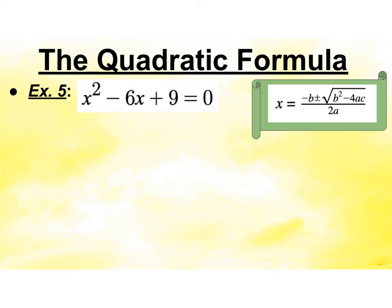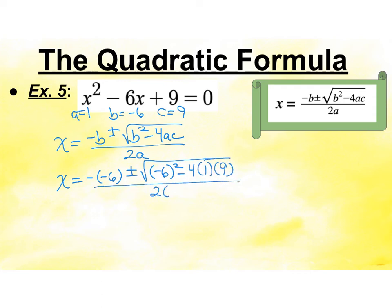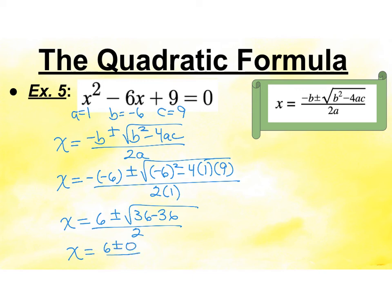Here we have the different equation. a is 1, b is negative 6, and c is now 9. Writing out the formula and substituting: negative negative 6 plus or minus the square root of parentheses negative 6 squared minus 4 times 1 times 9, all over 2 times 1. So x equals positive 6 plus or minus the square root of 36 minus 36, all over 2. That gives x equals 6 plus or minus 0 over 2. Since plus or minus 0 doesn't affect anything, x equals 6 halves, which is 3. This one only has one solution because the discriminant equaled 0.